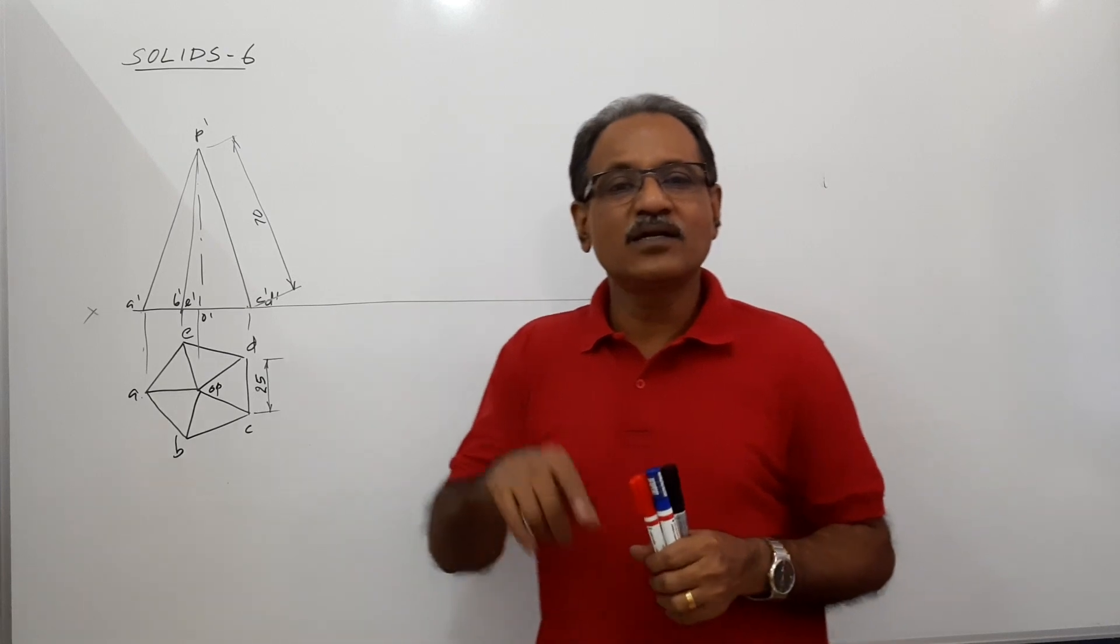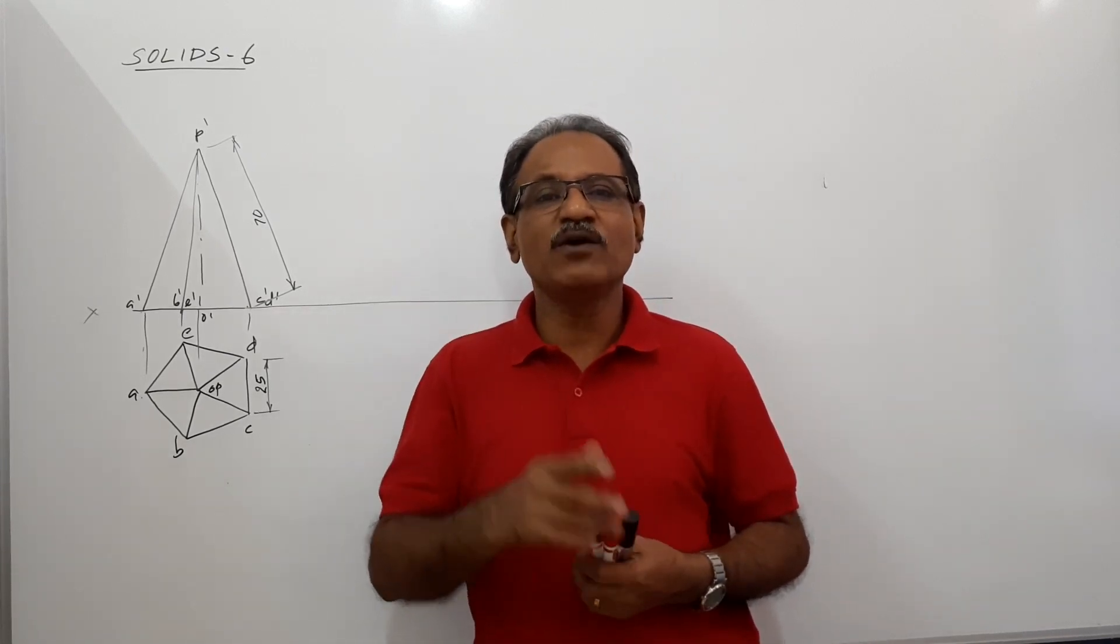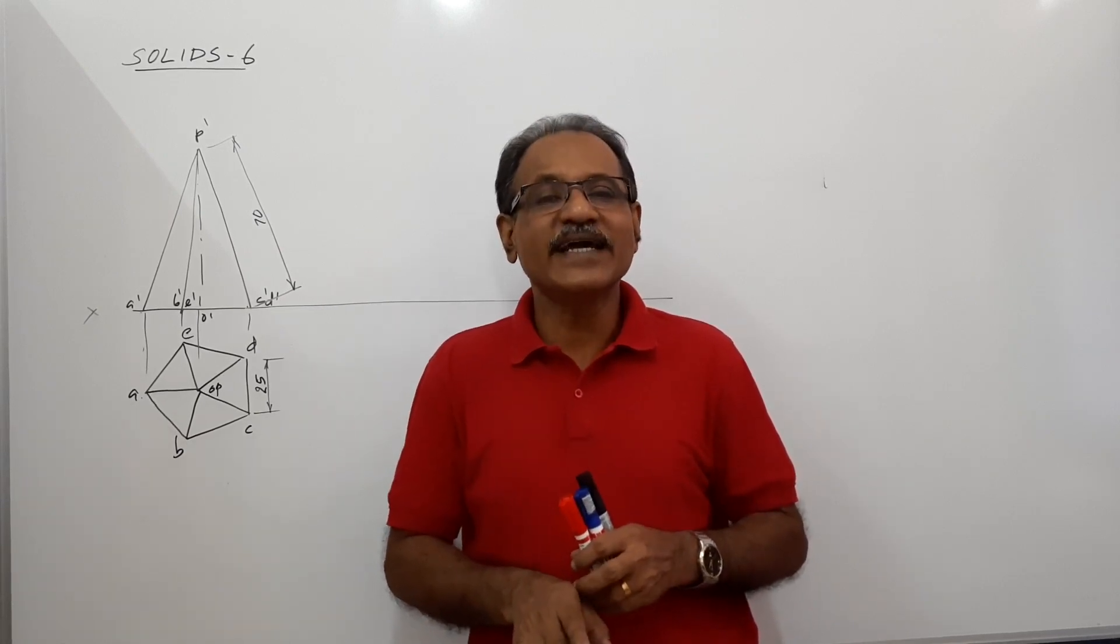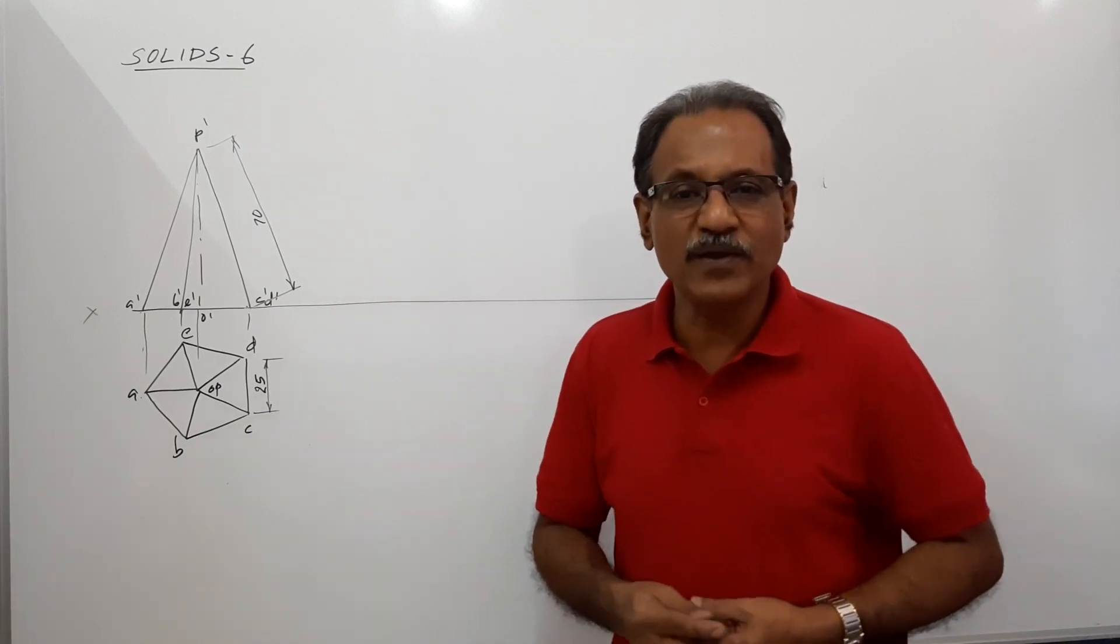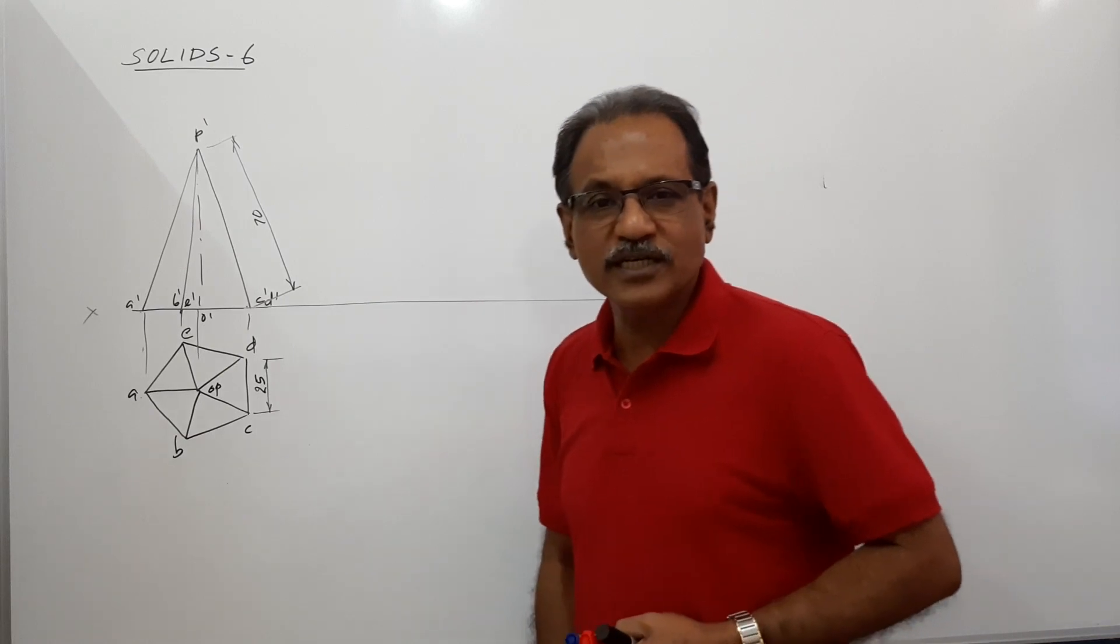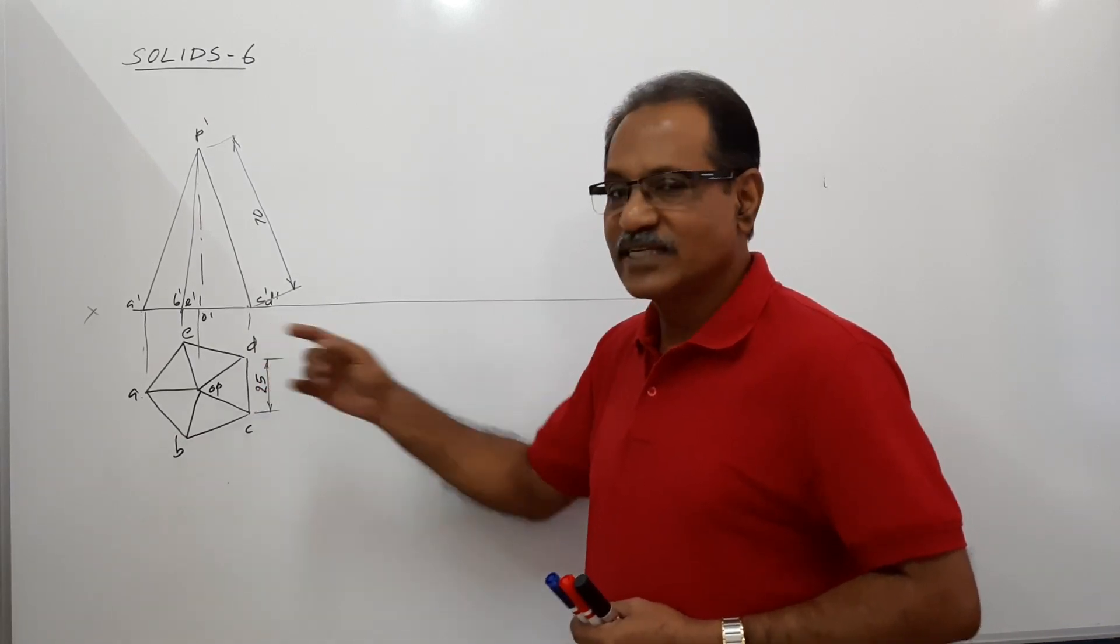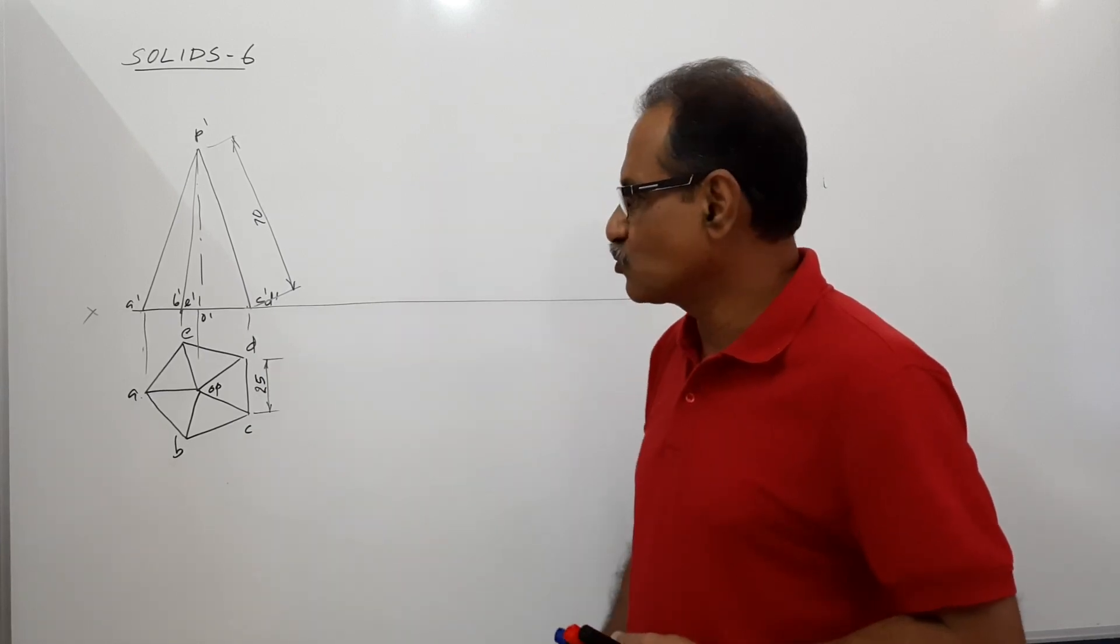The pentagonal pyramid, 25mm side, 70mm slant height, stands on HP on a side of base with the triangular face containing this side perpendicular to both HP and VP. I have chosen this simple position. I have drawn one side perpendicular to VP, the side CD, and the pyramid is resting on HP on its base.